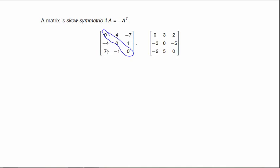Four and negative four. Negative seven and positive seven. One and negative one. Same thing here. Three minus three. Two minus two. And minus five and five.